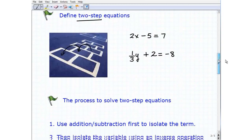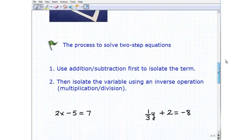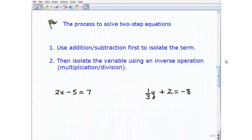So what is the process to solve two-step equations? It's actually pretty straightforward. The first thing you're going to do is use addition or subtraction to isolate the term. And what I'm talking about there is the variable term. So let me give you an example. Here's our two-step equations. This right here, the 2x is the term. It's the variable term. And in this particular example, one-third y would be the term.